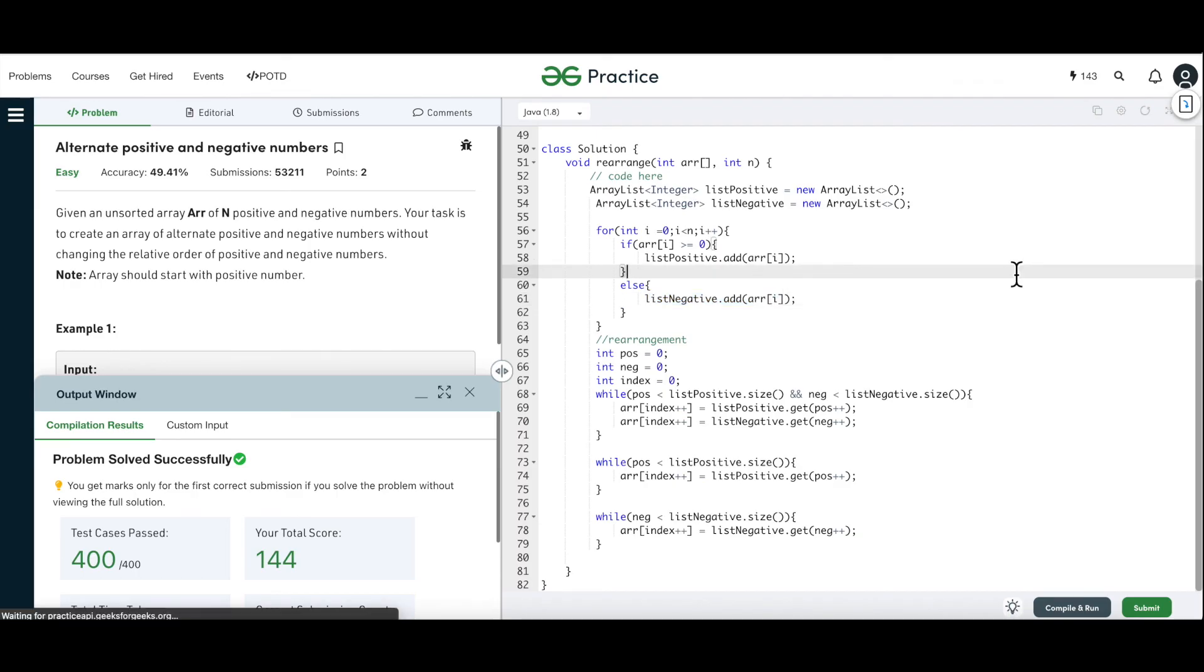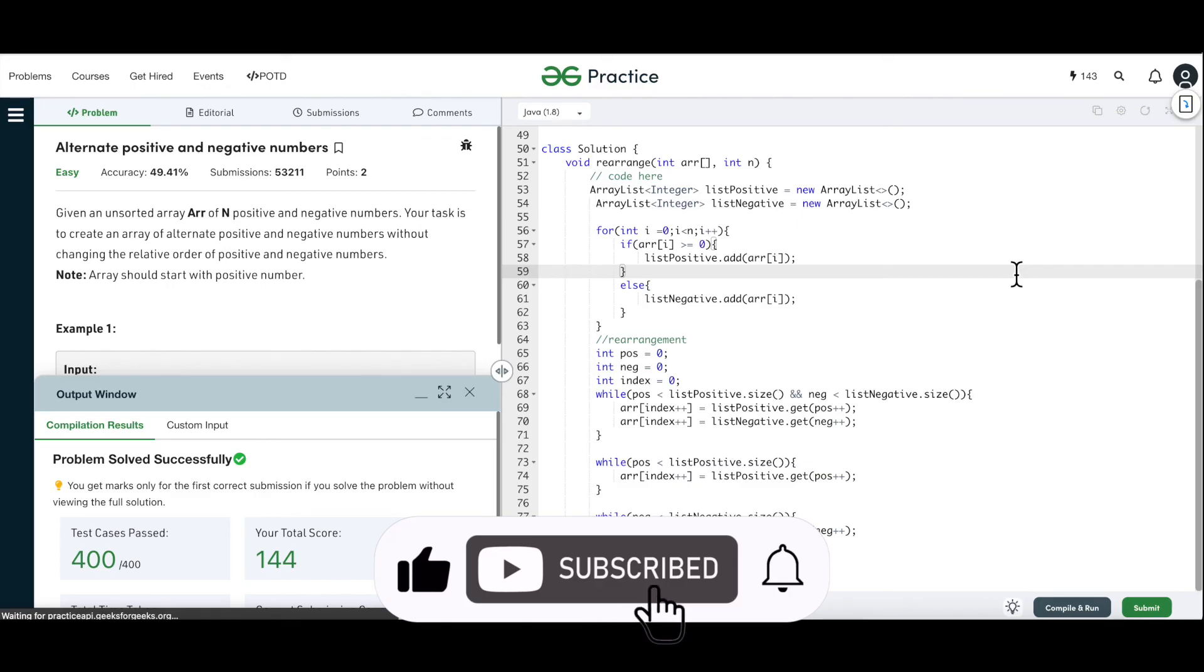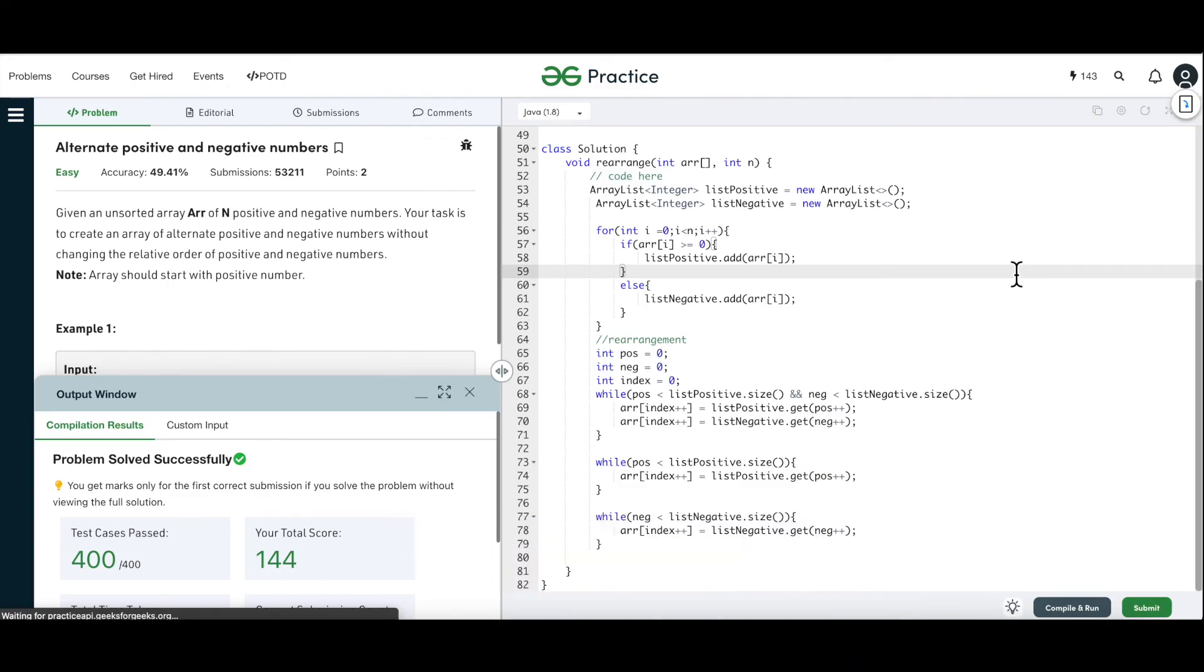So yeah, that was all about this question, rearrangement of the array by placing the positive and the negative numbers alternately. Do let us know in the comments below if you guys have any questions or doubts or you want to share any feedback on this video. If you have enjoyed the session so far, do hit the like button so that this can reach out to many more people and if it does, it just gives us enough motivation to put out more such content. Also, if you are looking forward to more videos like this, please don't forget to subscribe to the channel and press the bell icon next to the subscribe button to never miss an update on our upcoming videos. Thank you so much for watching.